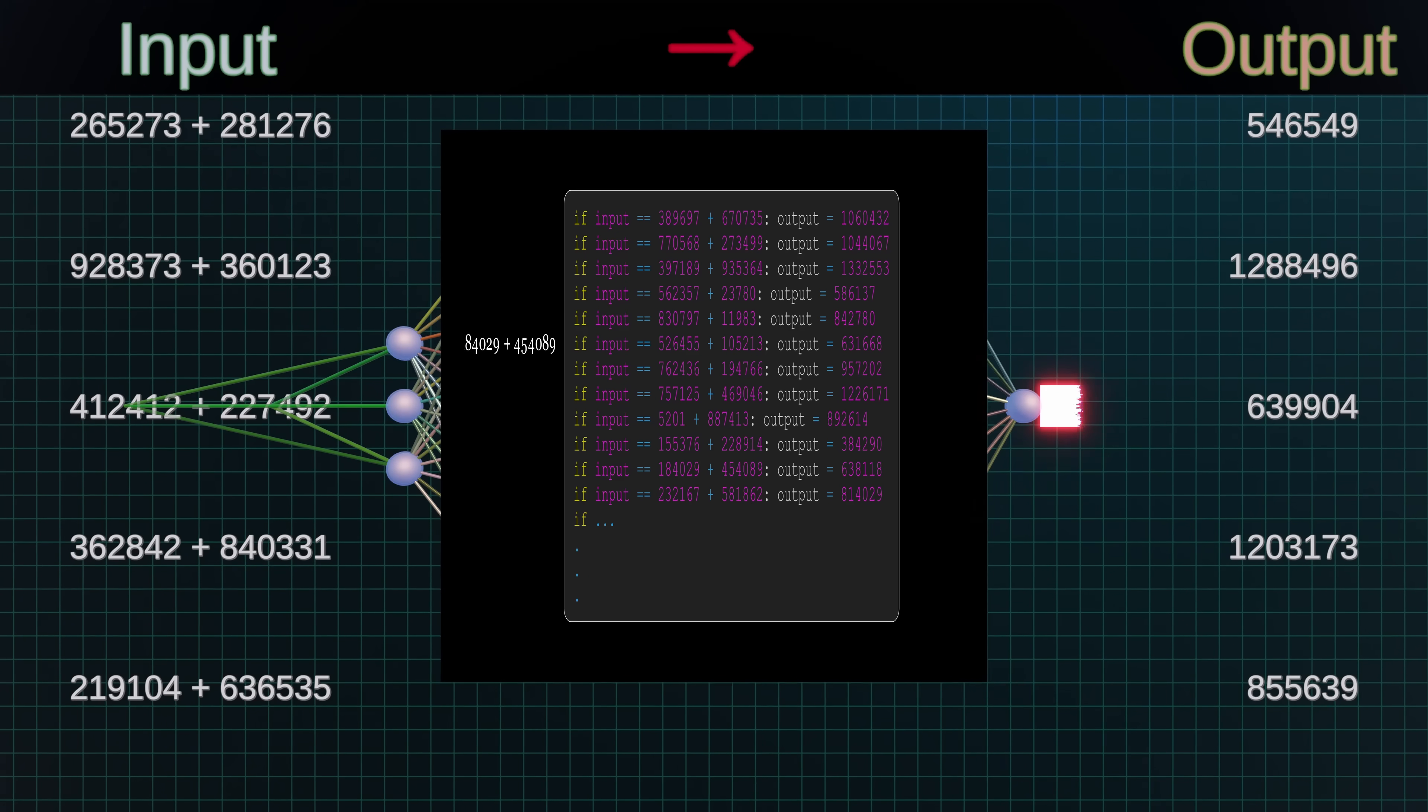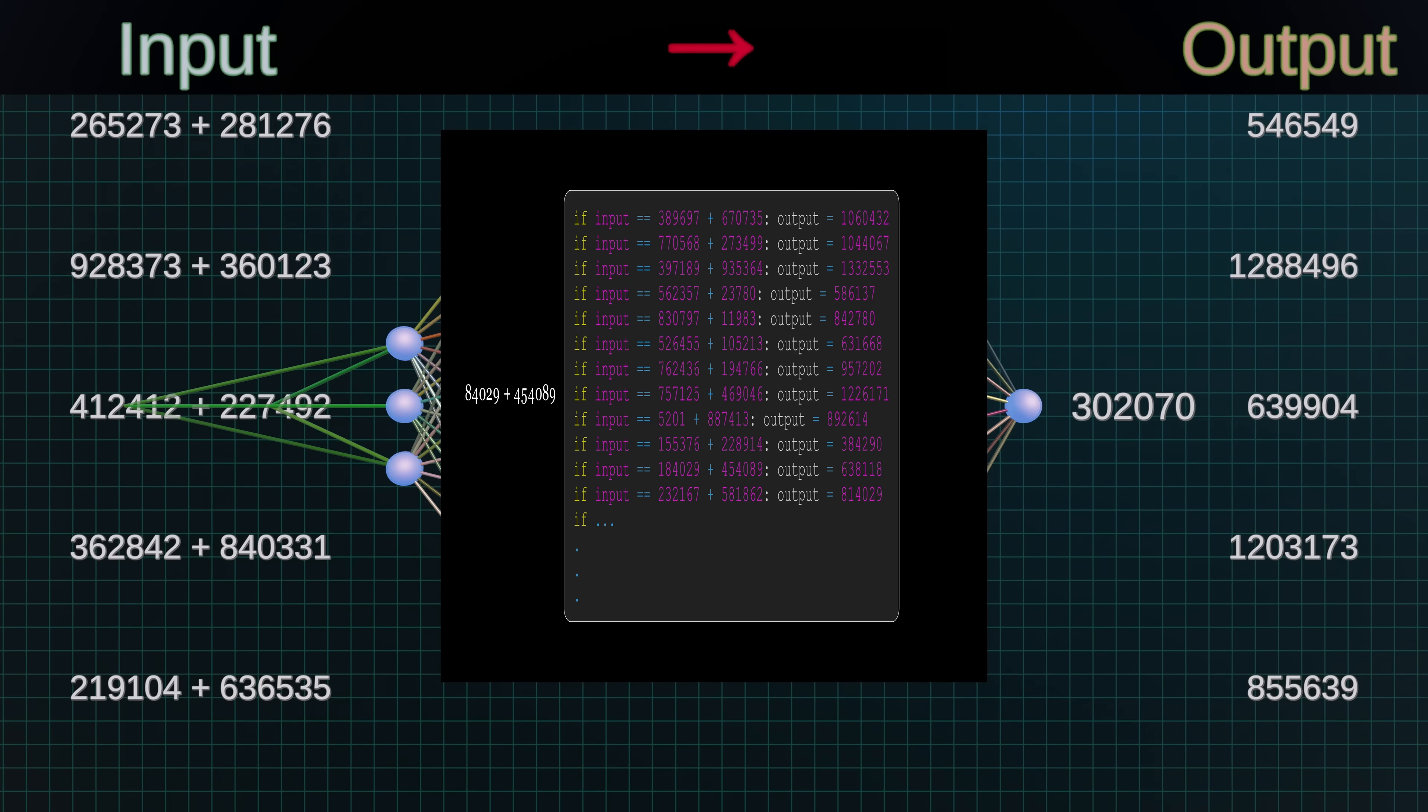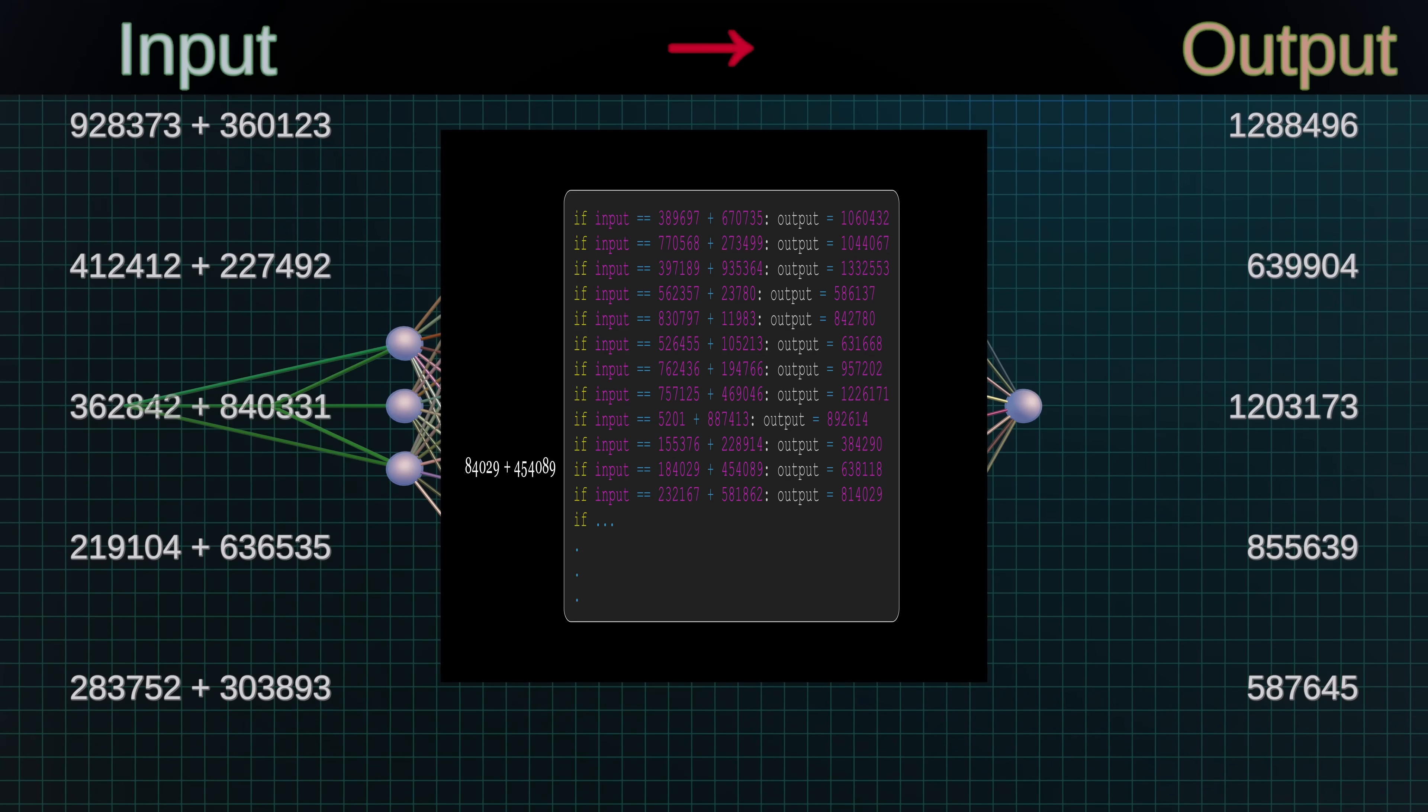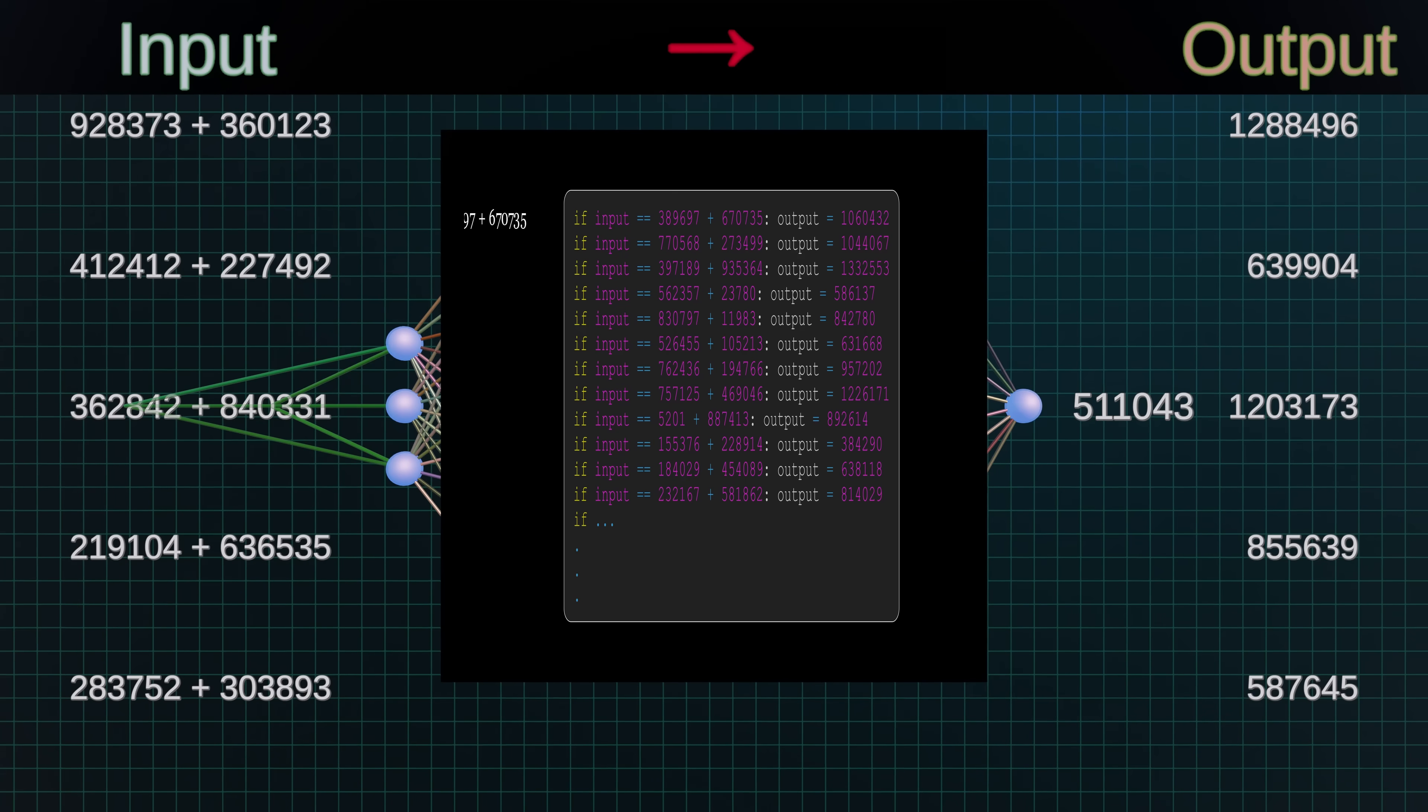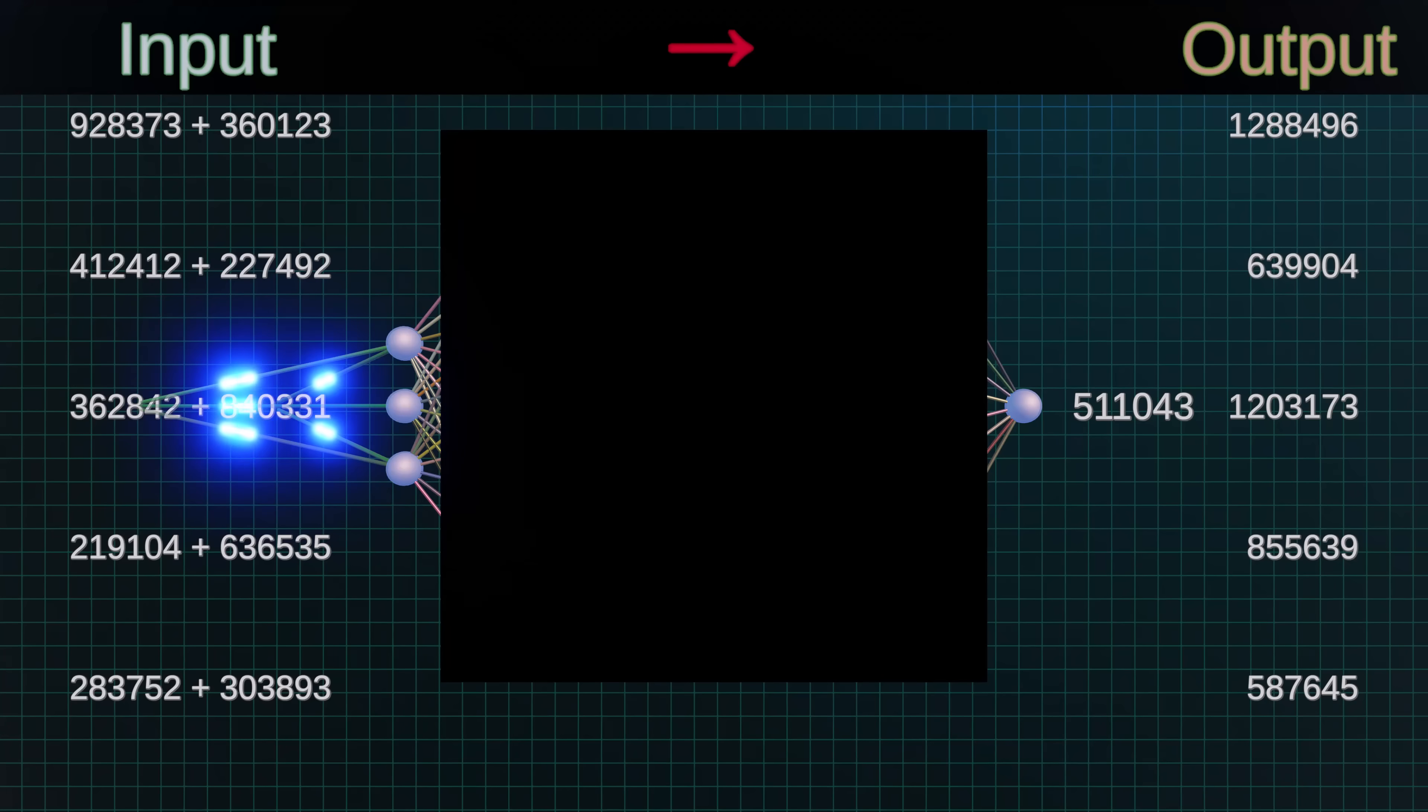It's like memorizing all of the answers to a test, instead of actually studying and understanding the material. And in fact, most possible configurations of weights that solve the training set will behave like this lookup table, not the algorithm. This is known as overfitting. The model memorizes all of the details of the training data, but fails to learn the underlying mechanism or rule behind the data, so it can't generalize to new situations.